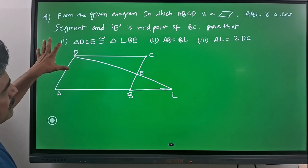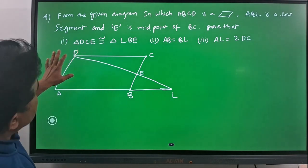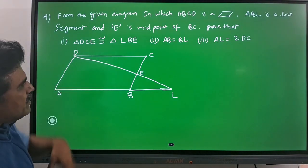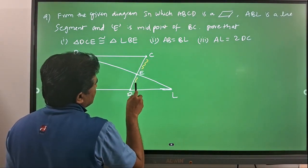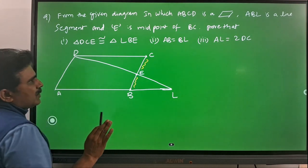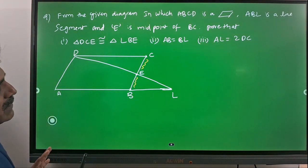First of all, ABL is a line segment and E is the midpoint of BC. E is the midpoint of BC, that means CE is equal to EB. That is the given information.